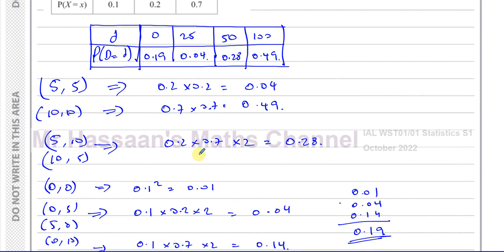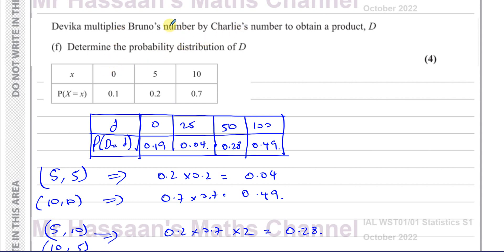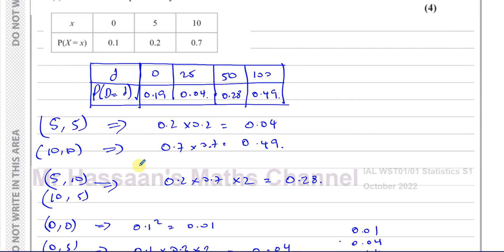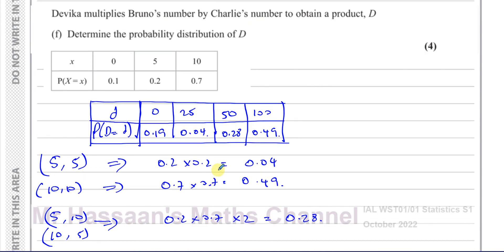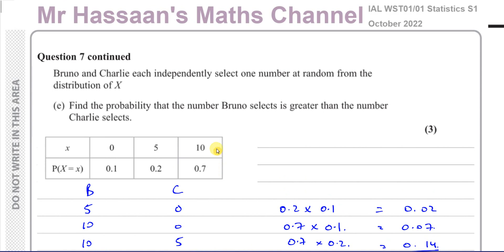That concludes this question. Bruno and Charlie each pick from 0, 5, and 10, and looking at all combinations of their products, D can be 0, 25, 50, or 100 with probabilities 0.19, 0.04, 0.28, and 0.49 respectively. That concludes question number 7 and this whole paper from October 2022, the International A-Level Excel S1 paper. Other questions from this paper and from discrete random variables on S1 can be found in the playlists shown. Subscribe and thank you for watching.